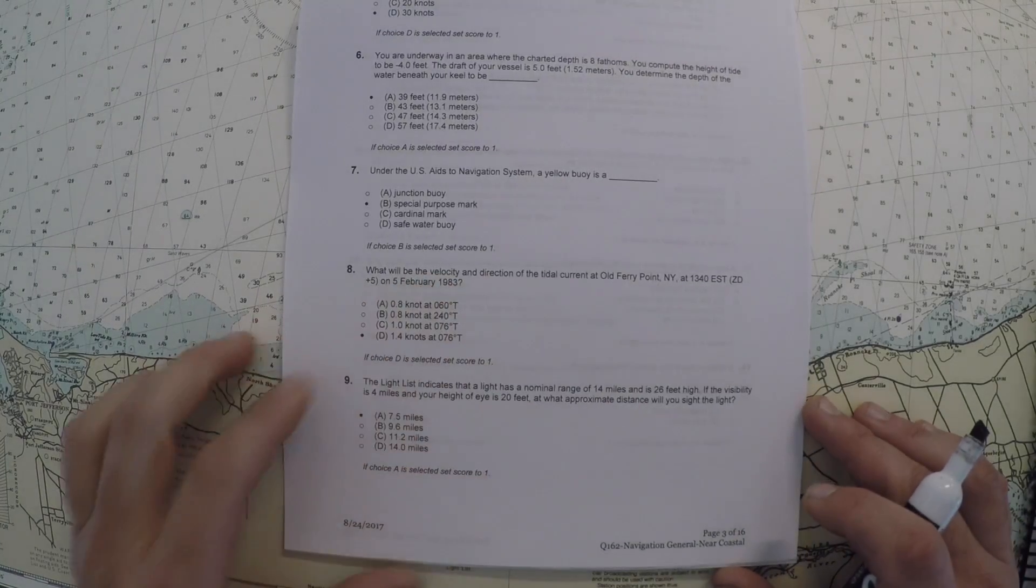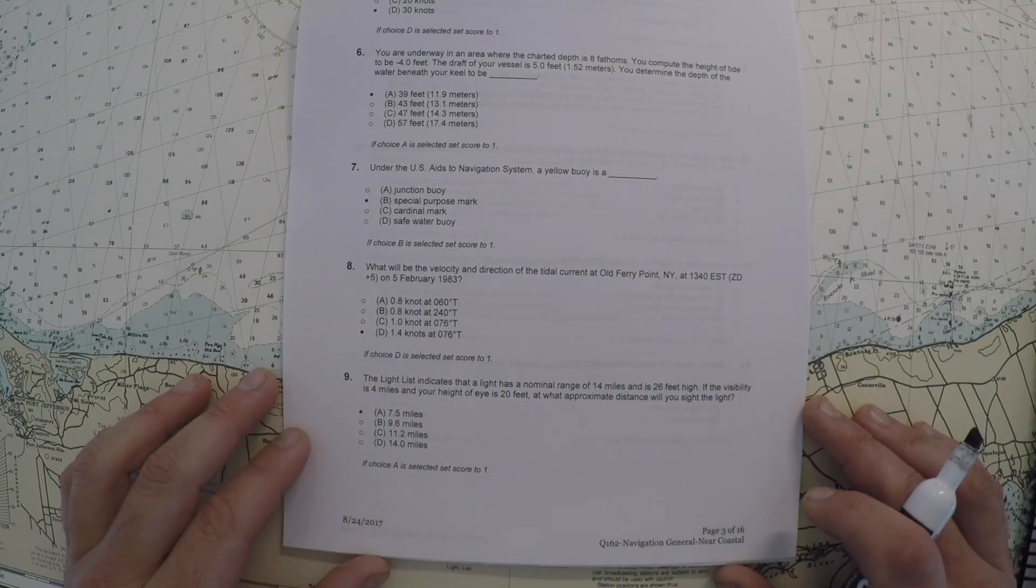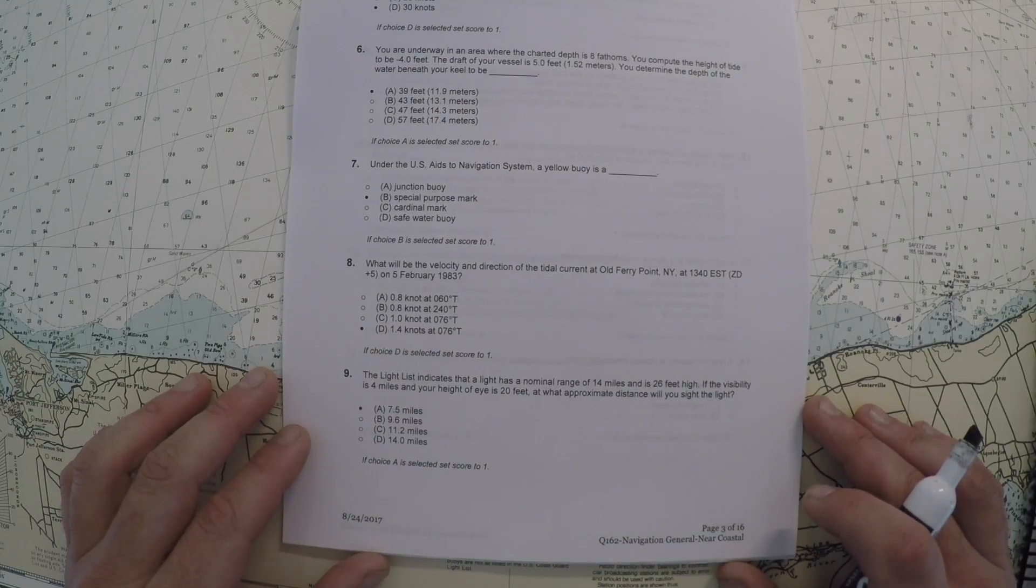All right, so our next problem is: what is the velocity and direction of the tidal current at Old Ferry Point, New York at 1340 Eastern?